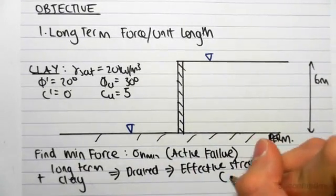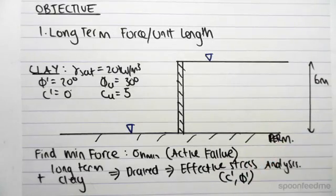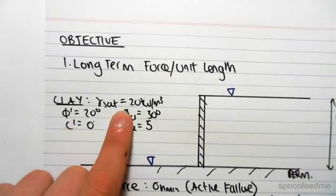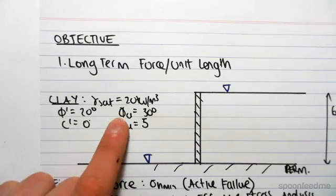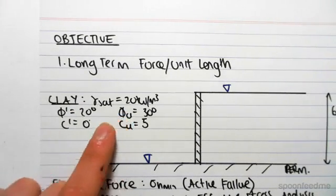Which means we're going to be using the parameters c' and φ'. So those values over there, we can ignore these values. If we were doing a short term, we would have to use these values, the undrained values. But we're doing long term.